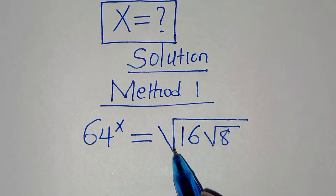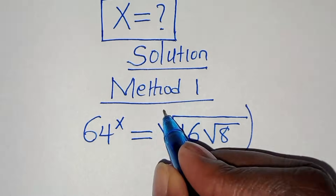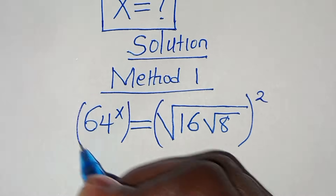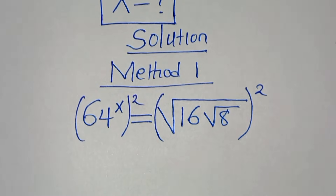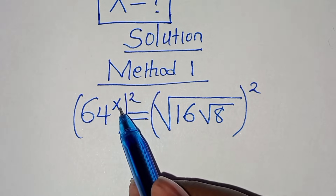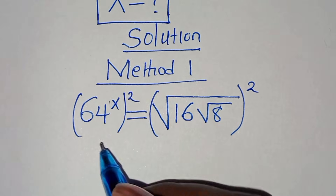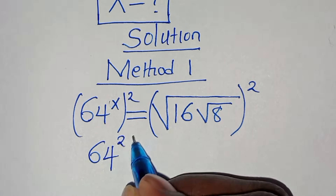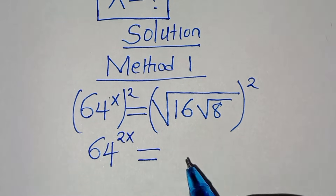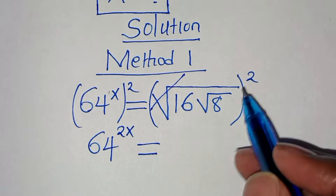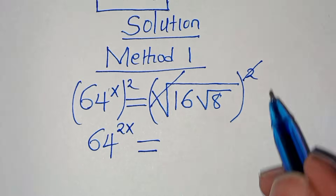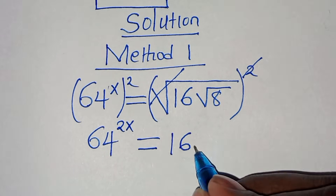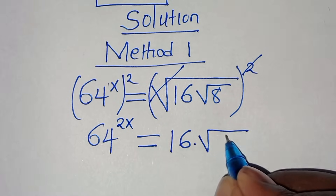The first step is to square both sides, so we have 64 raised to the power of x, raised to the power of 2, which gives 64 to the power of 2x. This equals 16, after eliminating the square root sign, multiplying by square root of 8.